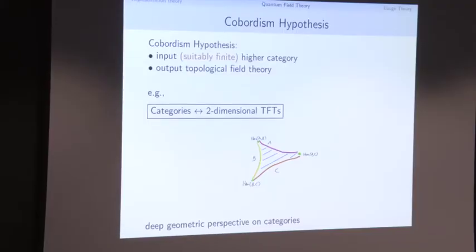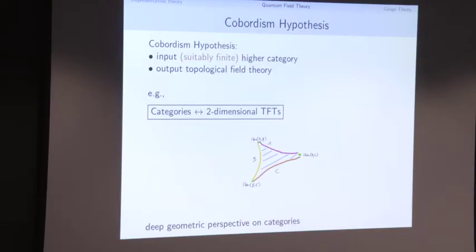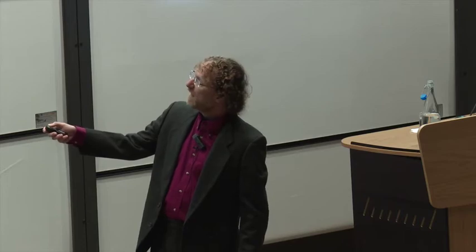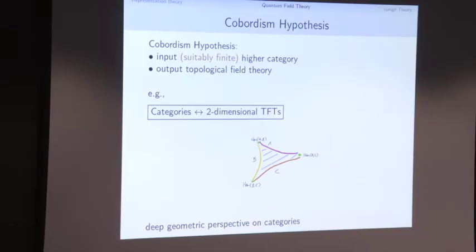You can think of the cobordism hypothesis as a tool: given your favorite suitably finite higher category, you run the algorithm and get a topological field theory. For example, in two dimensions, if you give me a category, I output a two-dimensional topological field theory having that category as its boundary conditions. The category has objects A, B, C; for every pair there's a hom space thought of as an interface; and composition is given by the cobordism picture. This gives an extremely powerful way of thinking about categories geometrically — a dictionary between higher category theory and the geometry or topology of manifolds.